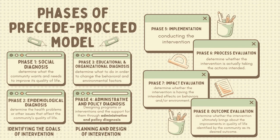Phase six is Process Evaluation — determining whether the intervention is actually taking the actions intended. Are we really doing the things that were planned to do? Is the process of our intervention being followed? Phase seven is Impact Evaluation — determining whether the intervention is having the intended effects on behavior and/or the environment. Is the intervention having the desired impact on the target population? Are we reaching the people in the community we are focused on?